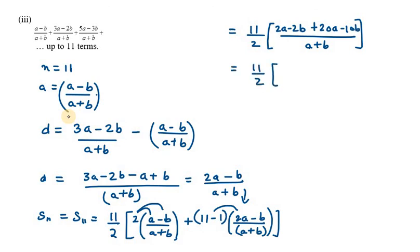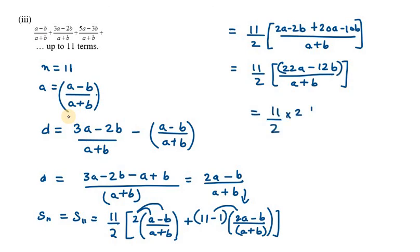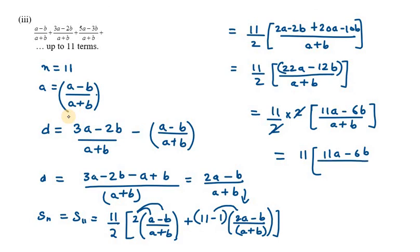So we have 11 over 2, in bracket (22A minus 12B) over (A plus B). We can take 2 as common from the numerator: 11 over 2 times 2 times (11A minus 6B) over (A plus B). The 2 cancels with the 2 in the denominator. We are left with 11(11A minus 6B) over (A plus B). This is the answer for the third part.